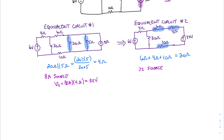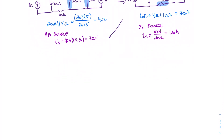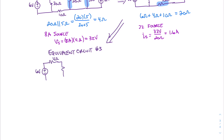The current for that current source will be I sub s equals 32 volts divided by the 20-ohm equivalent resistance, which equals 1.6 amps. Now that we've performed that source transformation, we can draw a third equivalent circuit. On the left we still have our 6-volt source, our 4-ohm resistor, our 30-ohm resistor, and now we have our parallel 20-ohm resistor and our 1.6-amp current source.